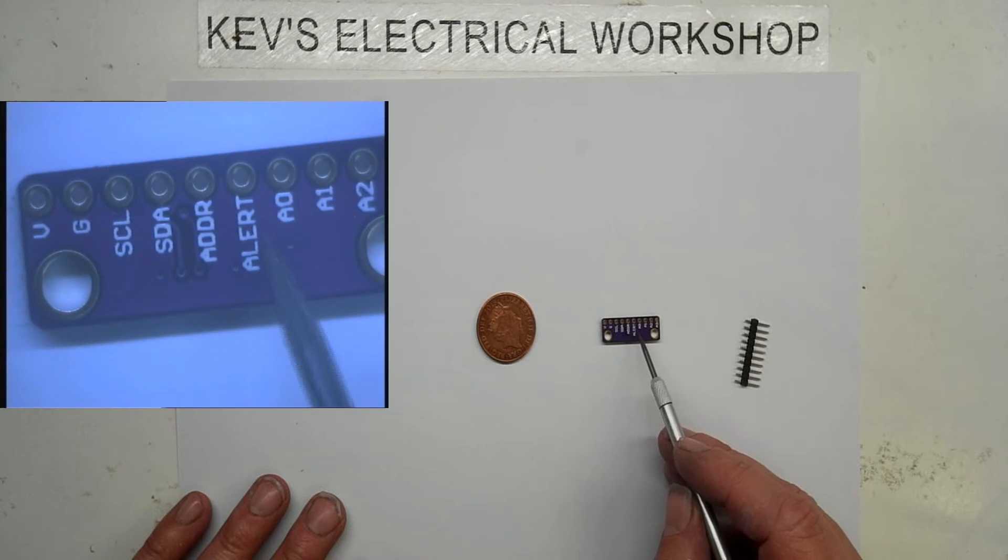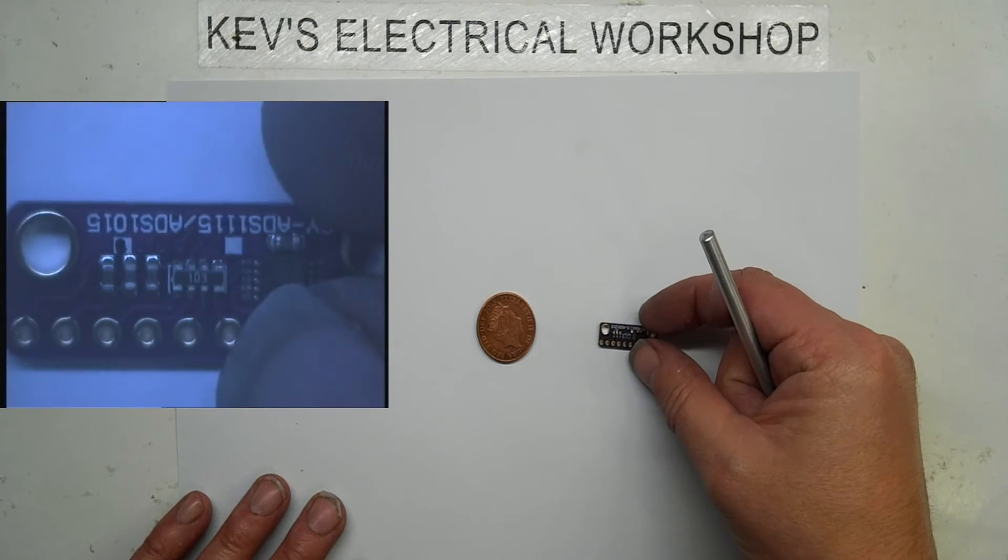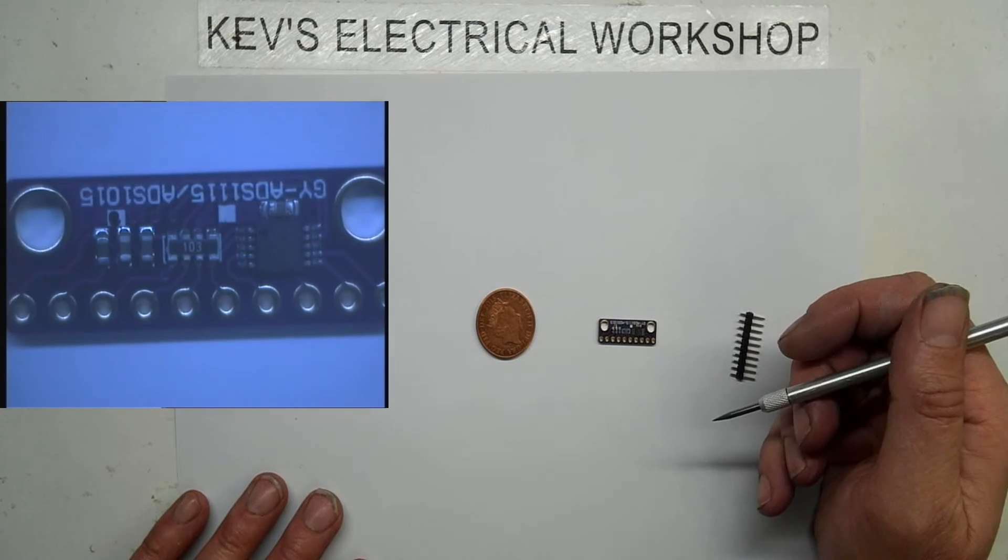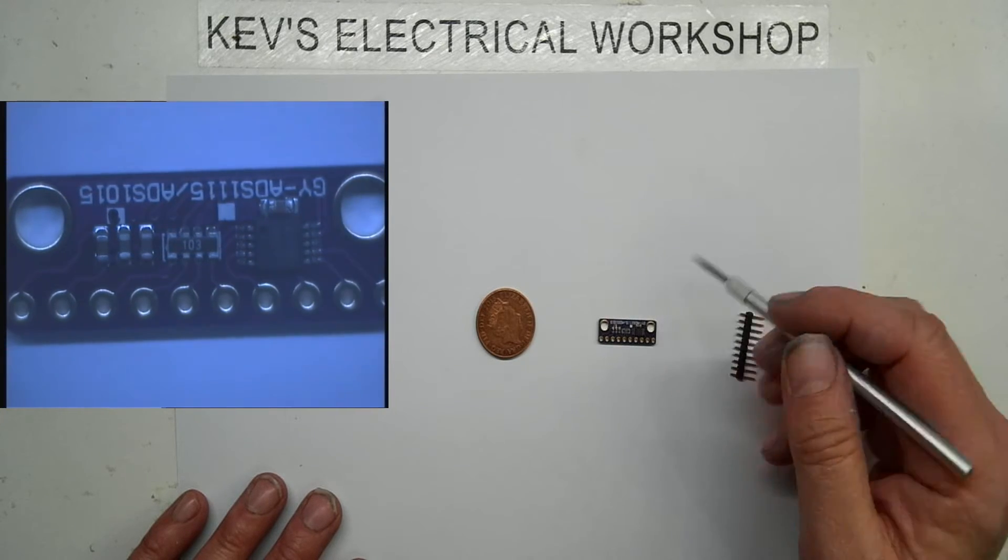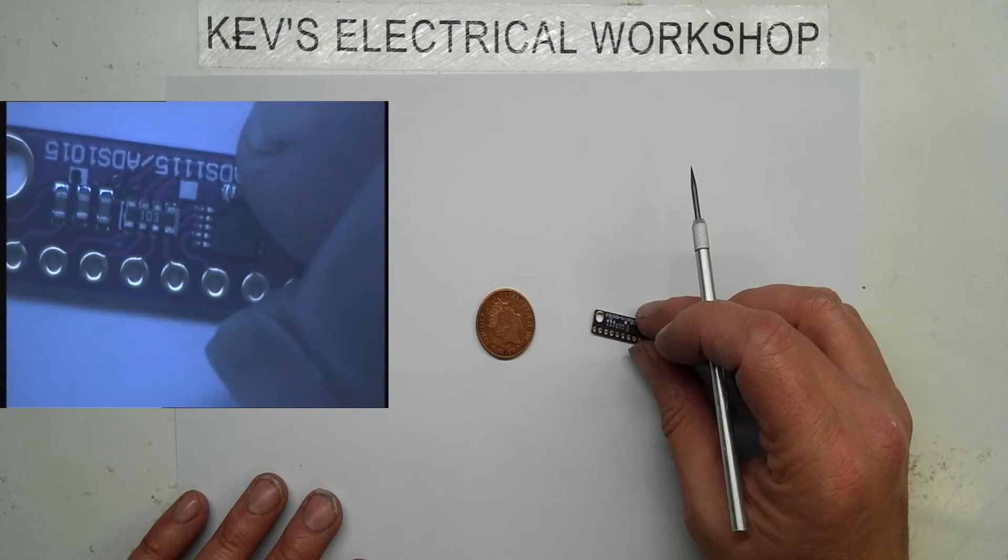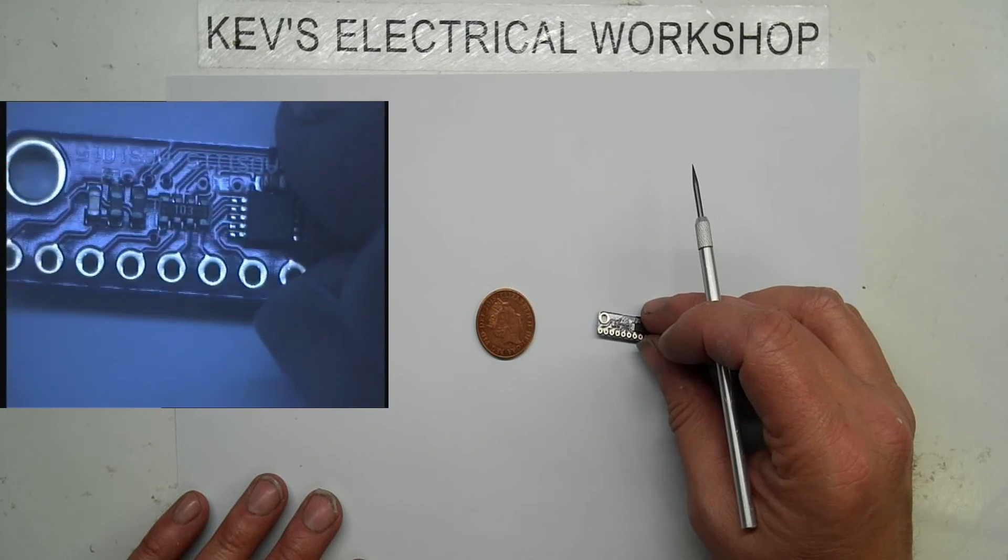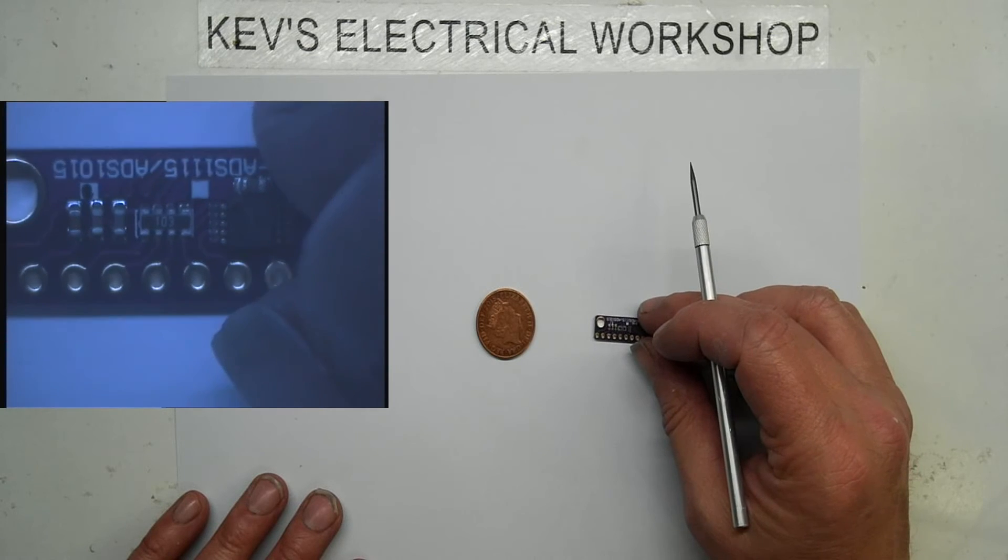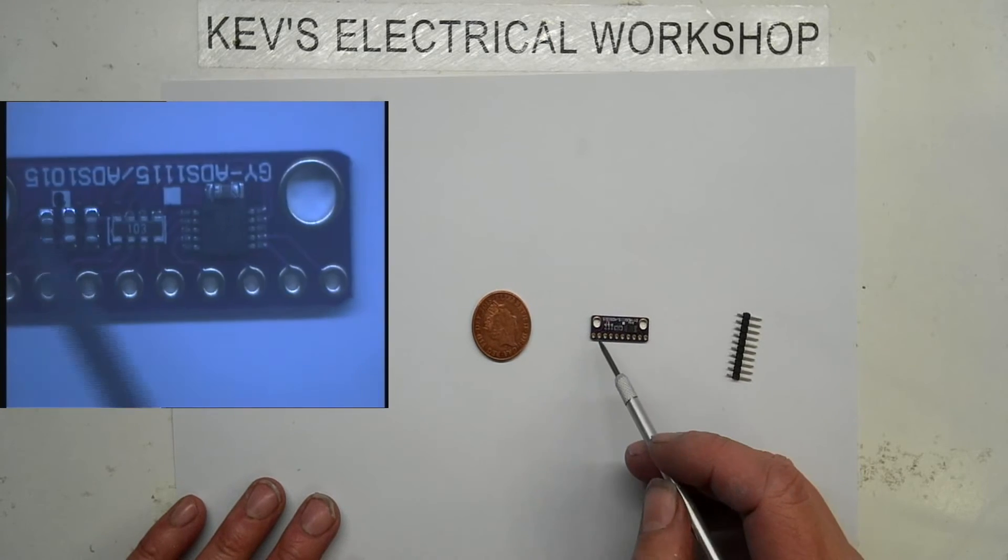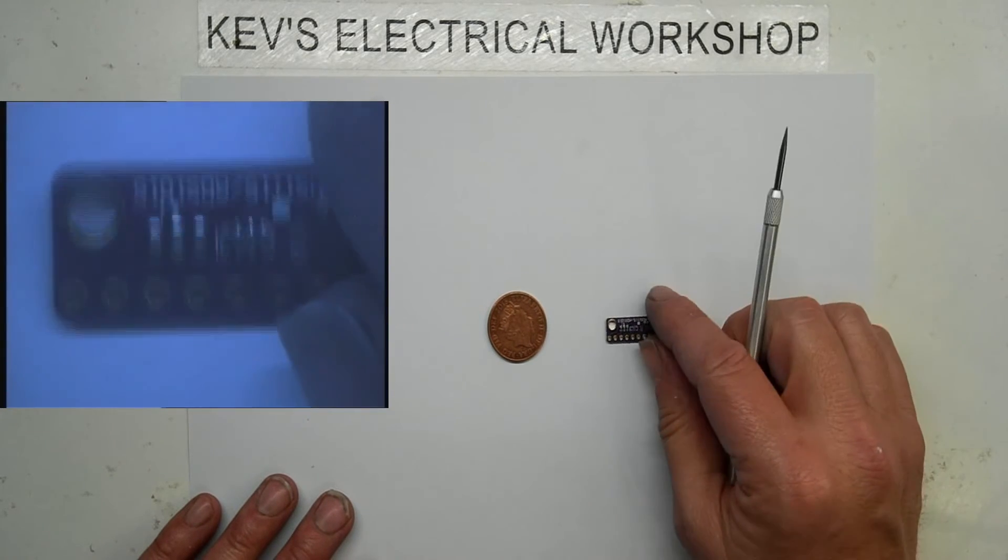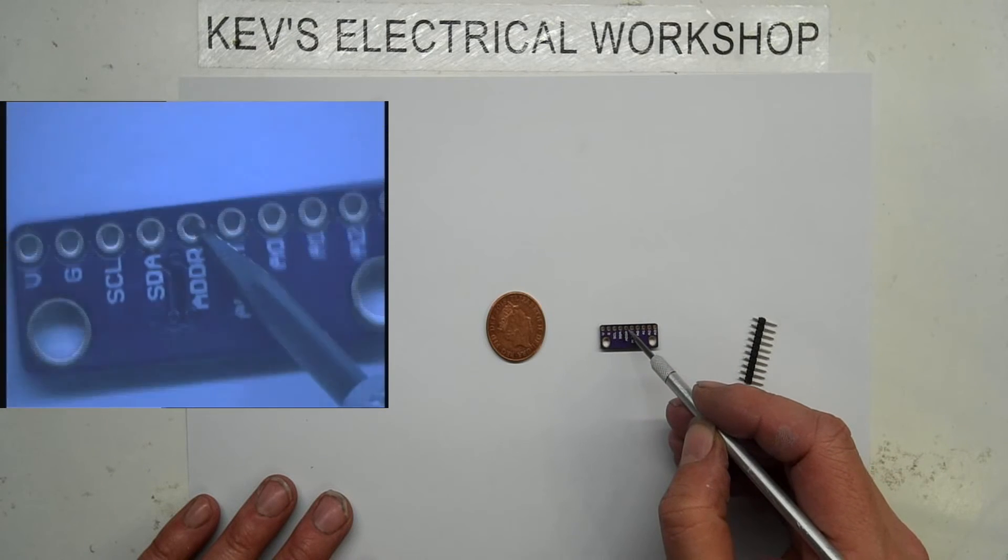All right, we've got an ADR and alert. I have no idea, I'd need to look up and see what they can do. Apparently these are addressable so you can daisy chain a few of these if you need more inputs. I don't know how they're addressable, I'd need to look that up because I can't really see any pads to short or whatever, but you do have this address line here.